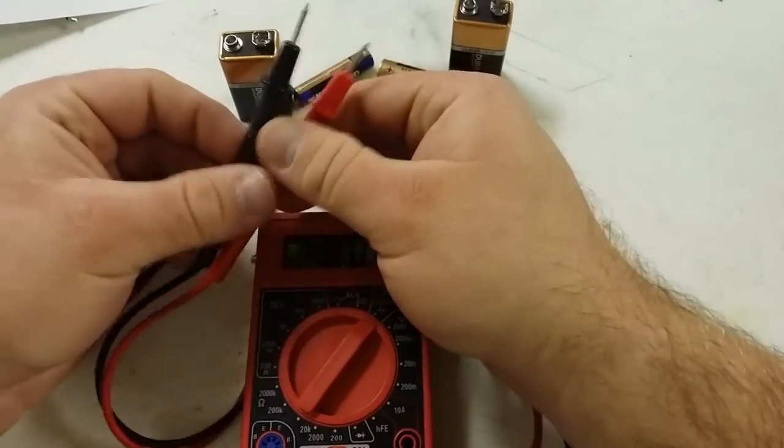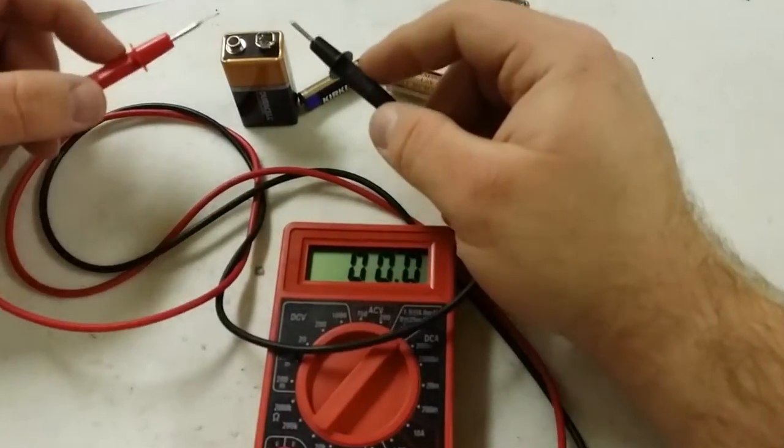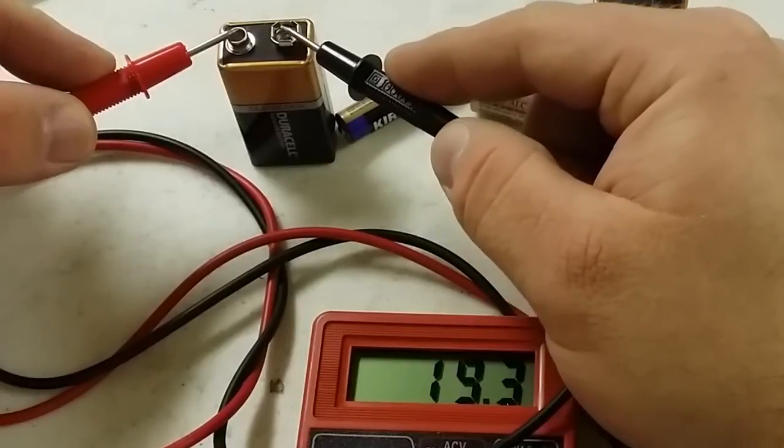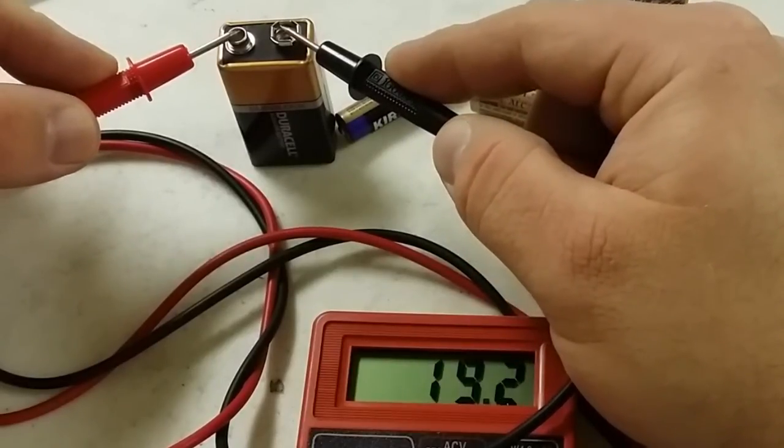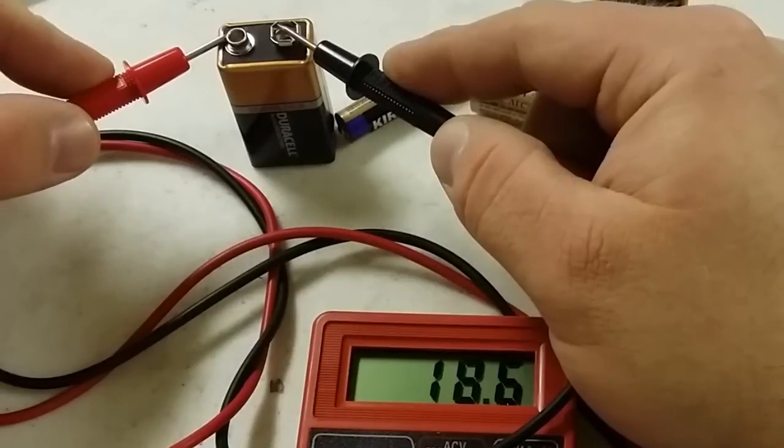So then you take your two leads and you'll put them on the positive and negative side of the battery. You'll have the red on the positive, the black on the negative. We can see here that this battery is reading about 19 milliamps, so it's almost a full battery.